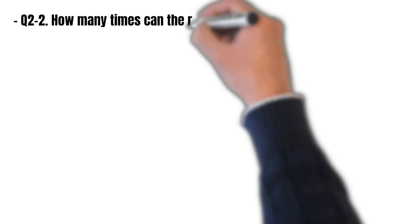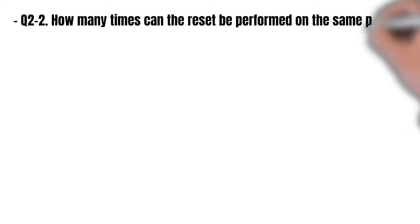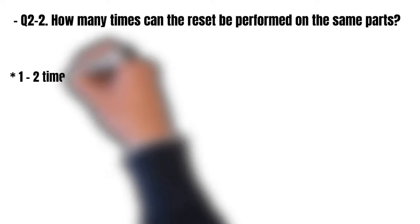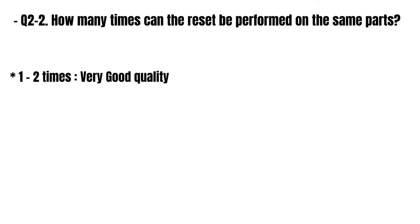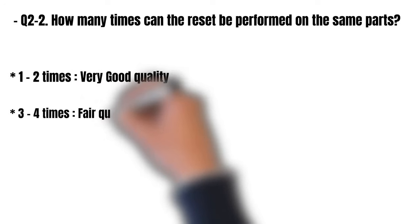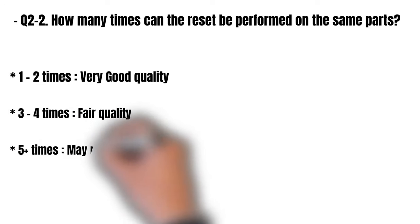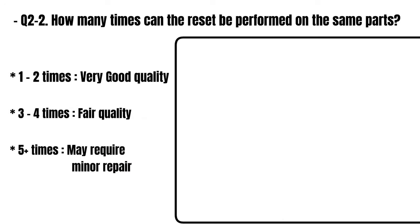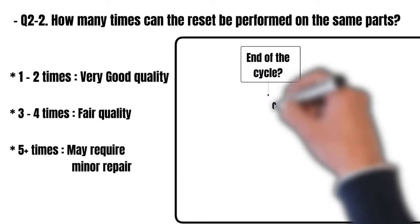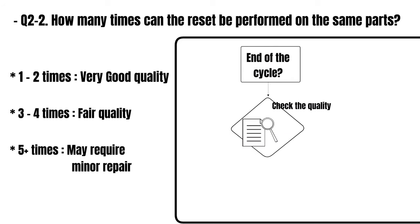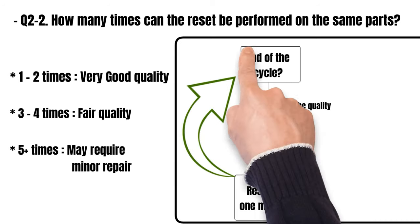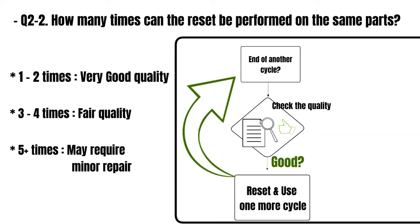Now, how many times can you apply the reset to the same parts? The results of the first and second resets will provide very high-quality printing. Most users have found that even during the third to fourth extra cycles, the printing quality remains satisfactory. The level of acceptability depends on your desired printing quality standards. Therefore, regardless of how many times you have used the same part so far, when you come across another part replacement message, assess the printing quality at that time. If the quality still meets your requirements, you can proceed with another reset and continue using the same part.